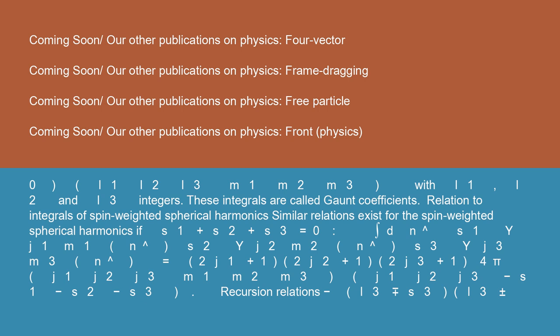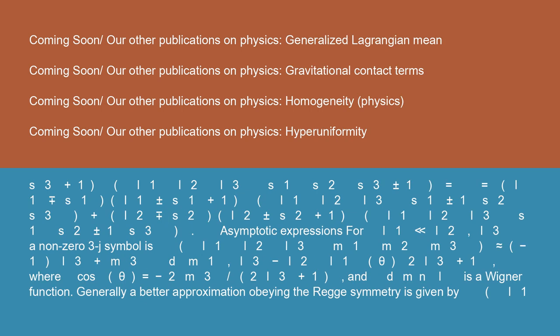Recursion relations: √[(L3 ∓ S3)(L3 ± S3 + 1)] * I(L1 L2 L3; S1 S2 S3±1) = √[(L1 ∓ S1)(L1 ± S1 + 1)] * I(L1 L2 L3; S1±1 S2 S3) + √[(L2 ∓ S2)(L2 ± S2 + 1)] * I(L1 L2 L3; S1 S2±1 S3).